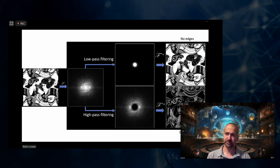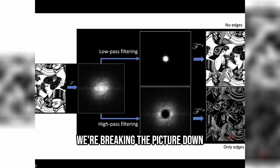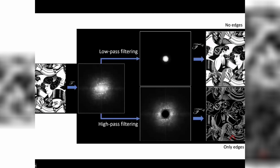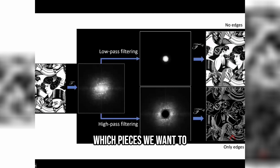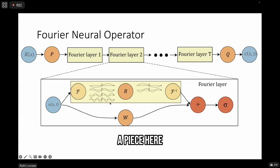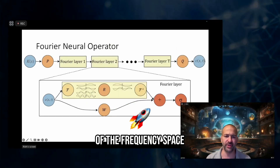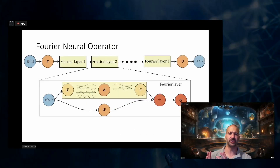This is what we're doing when we do a Fourier analysis. We're breaking the picture down into all of its pieces and then we're deciding which pieces we want to keep and which pieces we don't want to keep. So the next thing we do after we've done that, after we've taken a piece here and a piece here and we've learned some stuff, now I want to do it again and get a different part of the frequency space of the image.